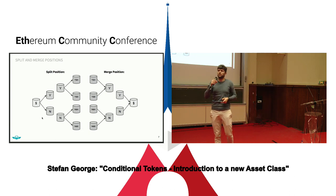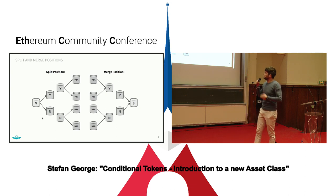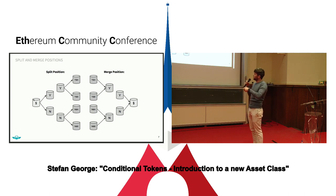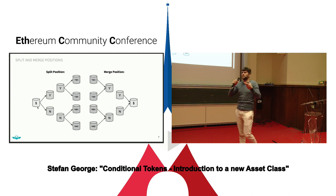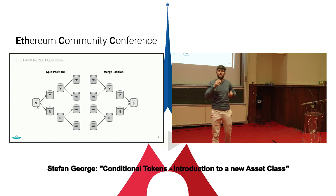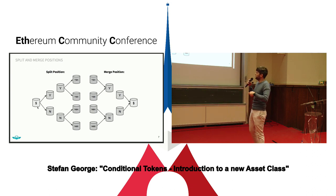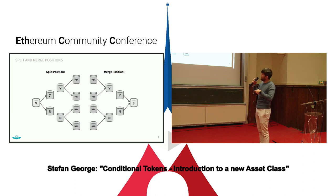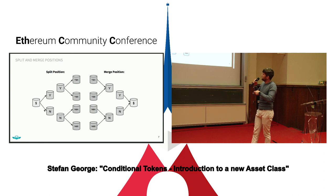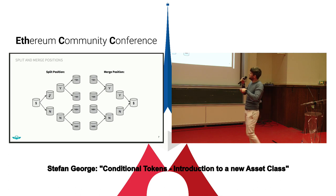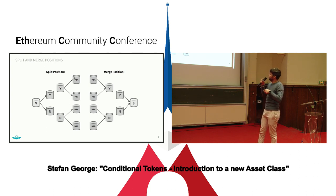We have split, merge, and redeem position. If you want to split a position, you start with the collateral that you have and then you split it under a certain Oracle condition — a certain question which has certain outcomes. If you split on the collateral then you get, for every possible outcome, one position which can be redeemed under the condition that it represents the right outcome. Now you can do another split on this position using another question and add these also to this position.